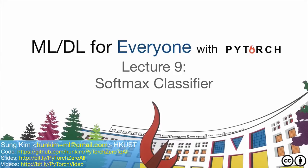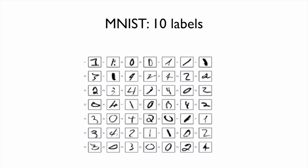In this lecture, we are going to talk about the Softmax classifier, which is widely used in neural nets. Suppose we get an image input which is a handwritten single digit number, and we want to classify each image into numbers between 0 to 9. So there are 10 categories.